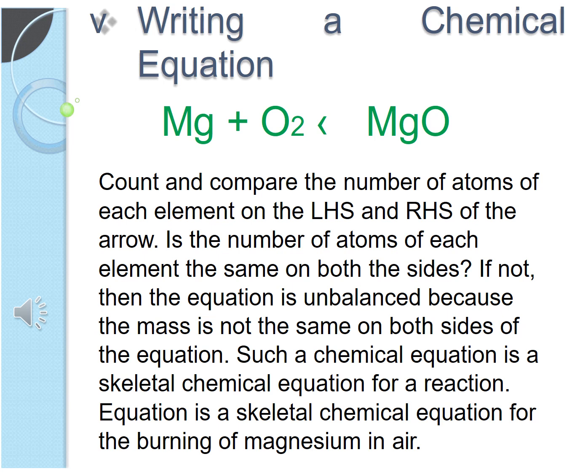If the numbers of atoms of each element on the left hand side and right hand side of the arrow is not same, then the equation is unbalanced and it should be balanced to follow law of conservation of mass which you have already studied in class 9.